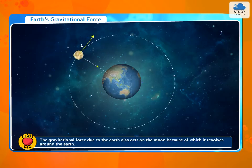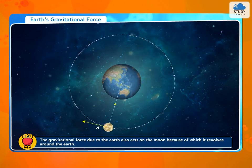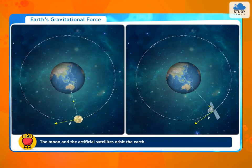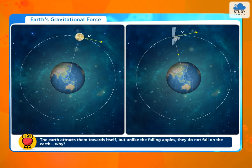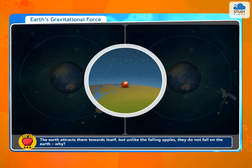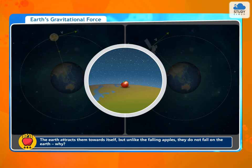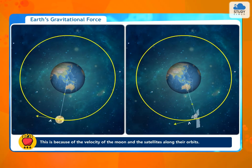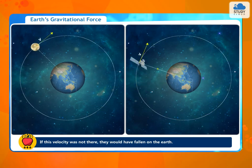The gravitational force due to the Earth also acts on the Moon, because of which it revolves around the Earth. A similar situation exists for artificial satellites orbiting the Earth. The Moon and the artificial satellites orbit the Earth, and the Earth attracts them towards itself. But unlike the falling apple, they do not fall on the Earth. This is because of the velocity of the Moon and the satellites along their orbits. If this velocity was not there, they would have fallen on the Earth.